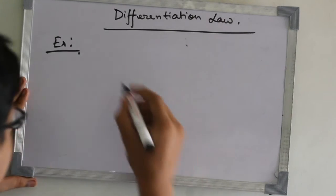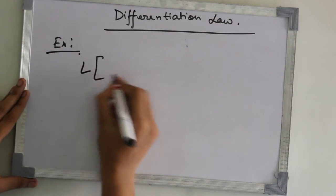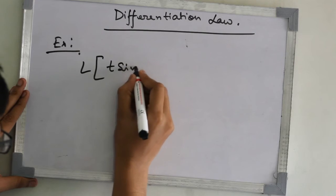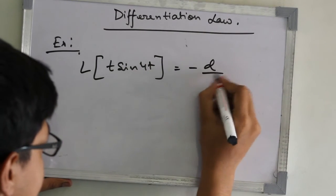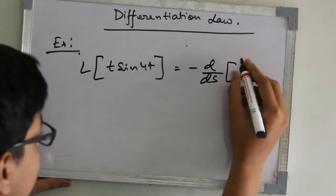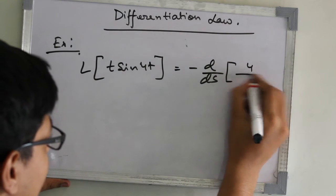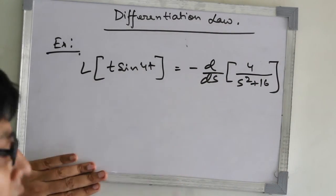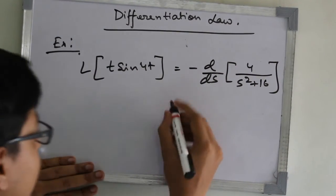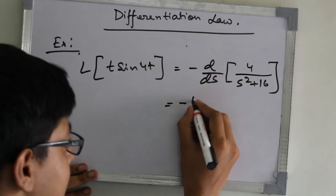Now we can write that L of t sin 4t is equal to minus d/ds into 4 upon s squared plus 16. So if we do the differentiation here, we will get minus 4.